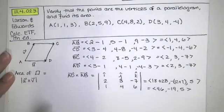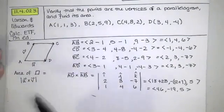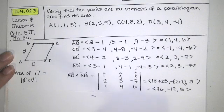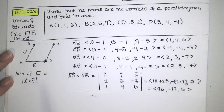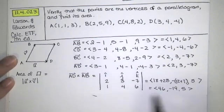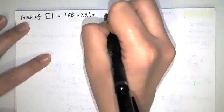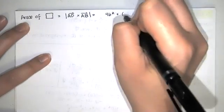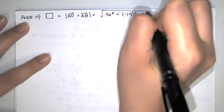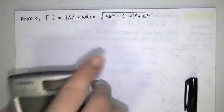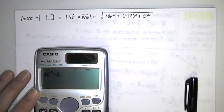As the components of the cross product, that's a vector that's perpendicular to both of these guys. It's going to point straight up out of the page if these were actually our vectors AB and AD. But we don't actually want that vector. We want the magnitude of that vector to find the area of this parallelogram. So that requires taking these components, squaring them, and adding them, and taking the square root. So our components were 46, negative 19, and 5.